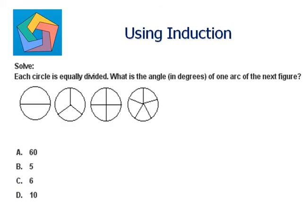Next problem: solve. Each circle is equally divided. What is the angle of one arc of the next figure? Now in the first figure, there are two arcs. So the complete angle is 360 degrees. 360 divided by 2 gives us 180 degrees.